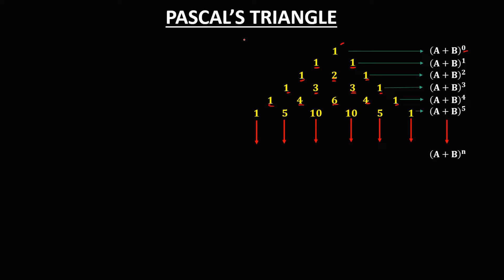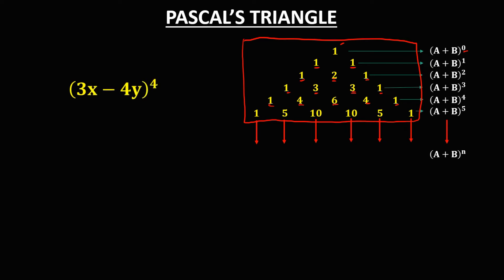So these numbers are just the numerical coefficients of the expansion. So if we have this given — the quantity of 3x minus 4y to the power 4 — to expand this binomial equation using Pascal's triangle, since the exponent is 4, the numerical coefficients are 1, 4, 6, 4, 1.